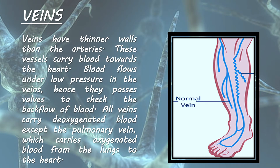Veins have thinner walls than the arteries. These vessels carry blood towards the heart. Blood flows under low pressure in the veins; hence, they possess valves to check the backflow of blood. All veins carry deoxygenated blood except the pulmonary vein, which carries oxygenated blood from the lungs to the heart.